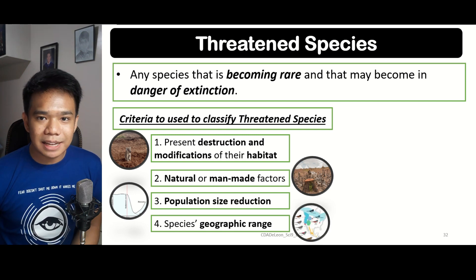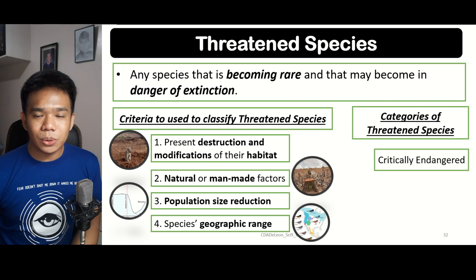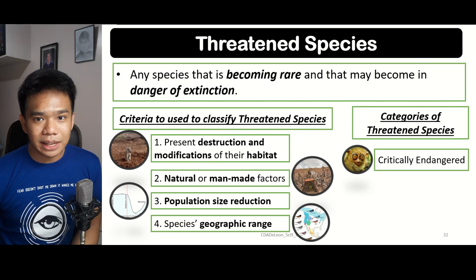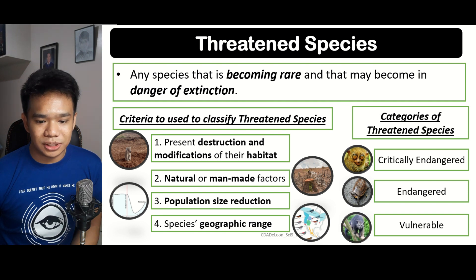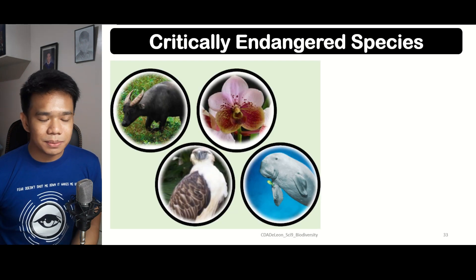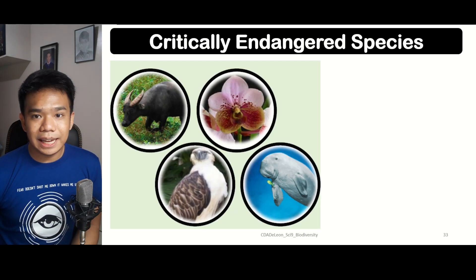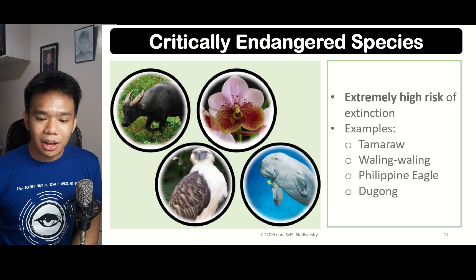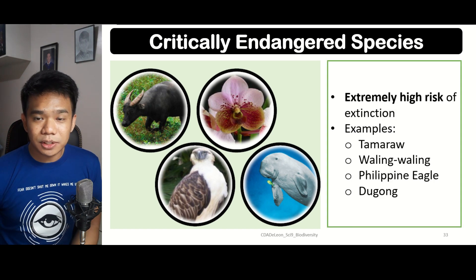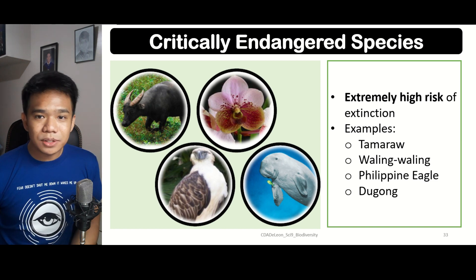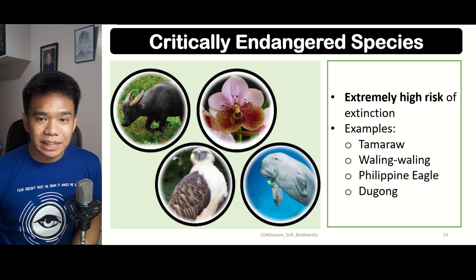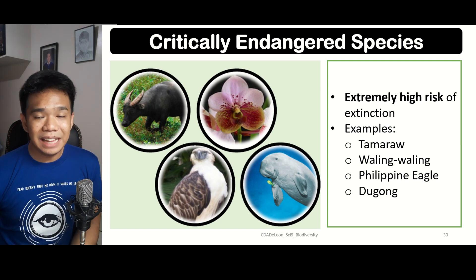Threatened species can be classified into three categories: critically endangered, endangered, and vulnerable. Critically endangered species are those with an extremely high risk of going extinct. Some examples of critically endangered species in the Philippines are the tamaraw, the waling-waling, the Philippine eagle, and the dugong.